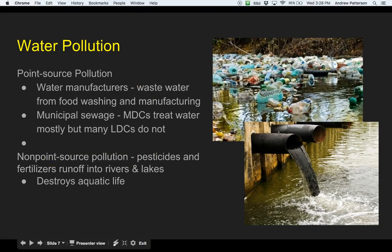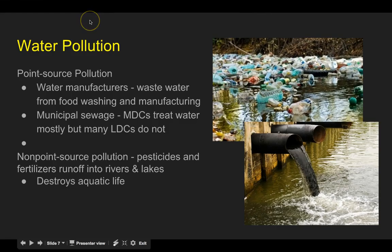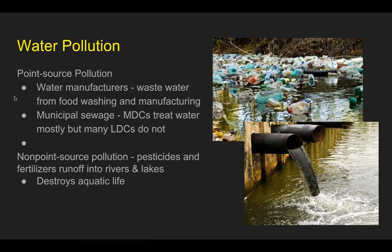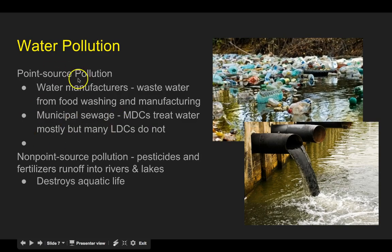Water pollution — you've got two kinds. You've got point source pollution, where it's being polluted right there at the source. For example, water from manufacturers — wastewater from food washing and manufacturing. If you need water to wash out your product, all those chemicals and waste go into the water and are deposited somewhere, often right around the plant. Municipal sewage is another example — more developed countries treat their water, but many less developed countries don't, with human waste going right into the water.